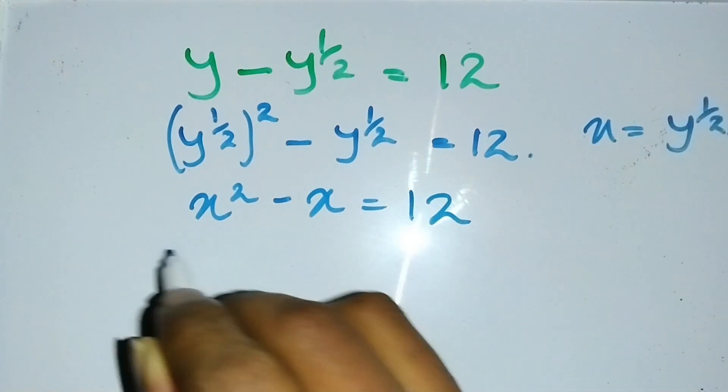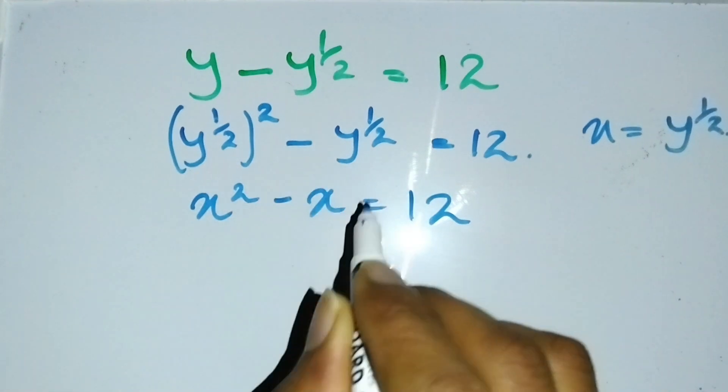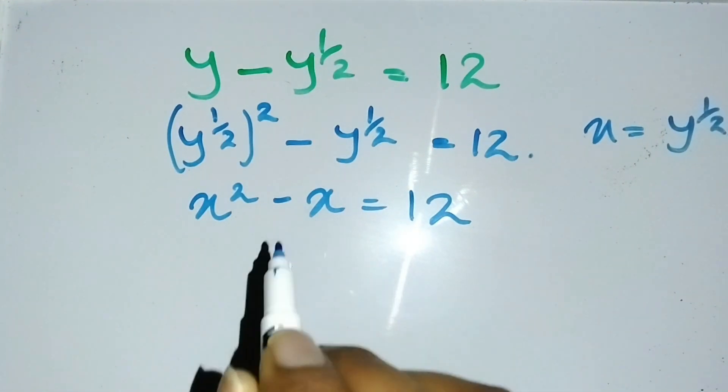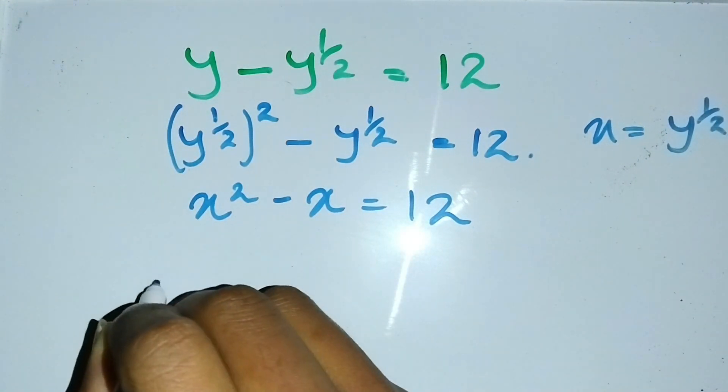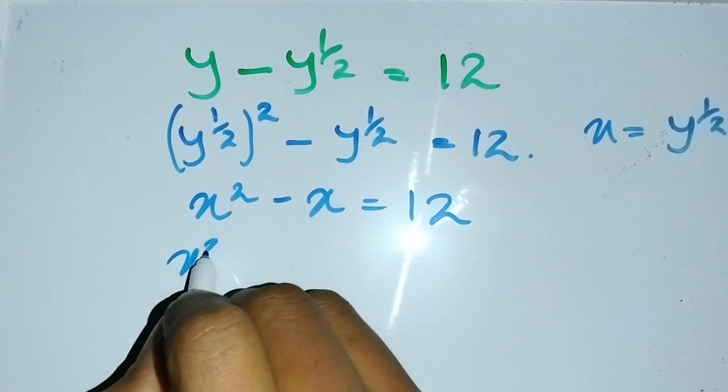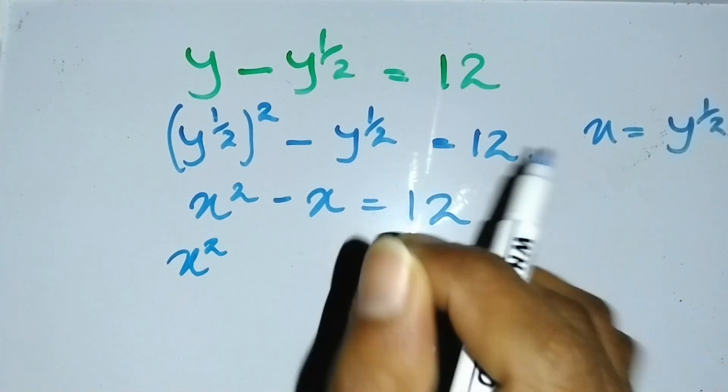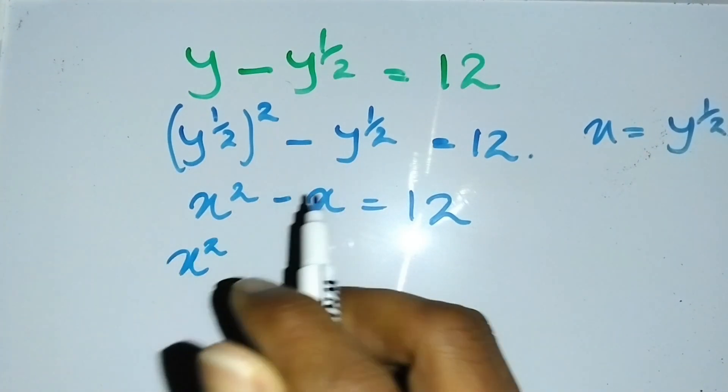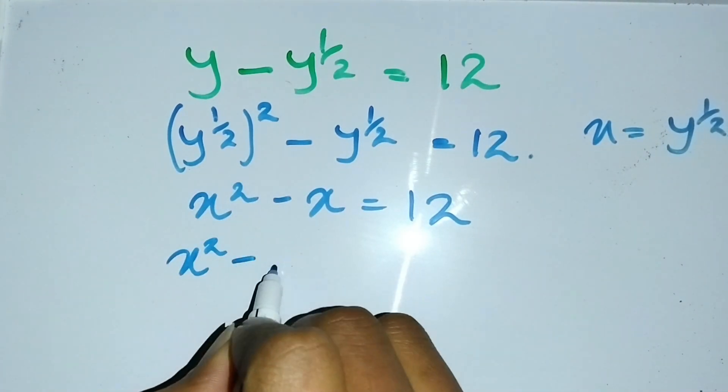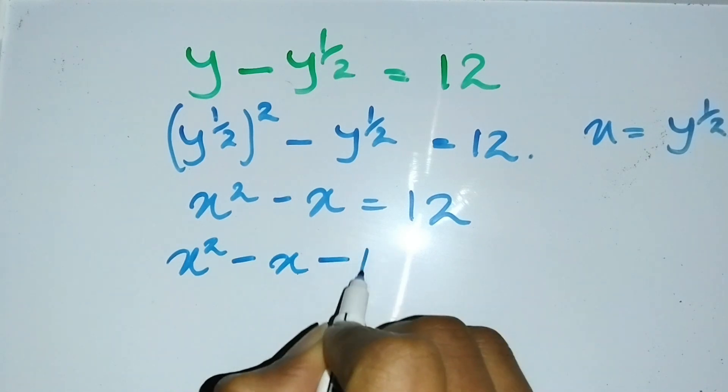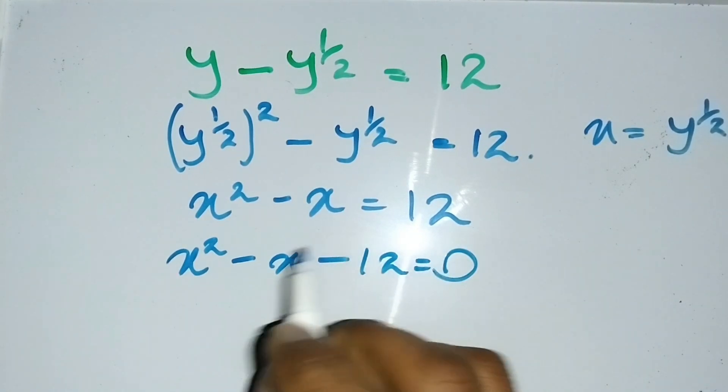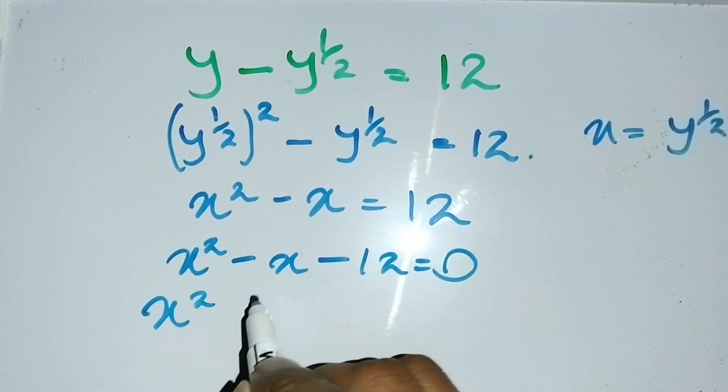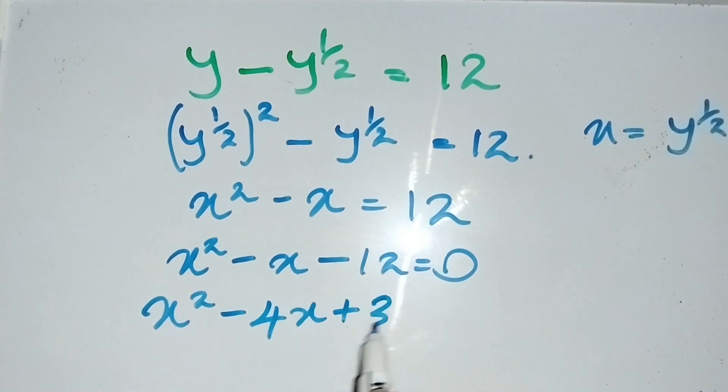Then I can solve this value as below: I can take this 12 to my left side, x^2 - x - 12 = 0, and then split the middle term: x^2 - 4x + 3x - 12 = 0.